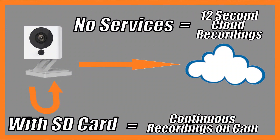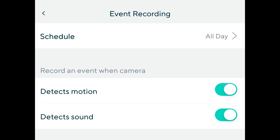To clarify: with continuous recording, the remote cloud 12-second recordings still go to Wyze's servers — those are still there. So as long as you have motion and sound event detection enabled, you're at least sending 12-second videos to Wyze's servers for storage there for up to 14 days.